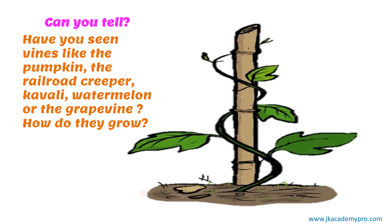Now, look at this picture. Can you tell? Have you seen vines like the Pumpkin, the Railroad Creeper, Kavali, Watermelon or the grapevine? Now, how do they grow? Look at the picture very carefully again. How do they grow?